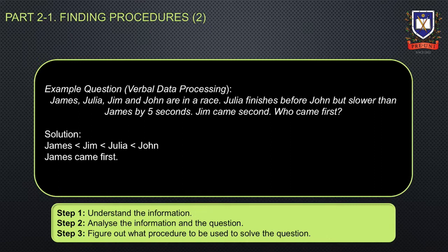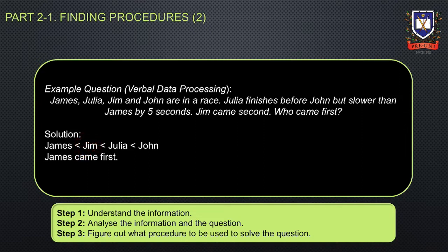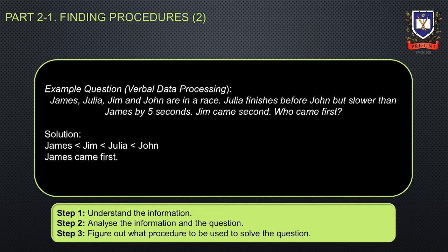We firstly know that Julia finishes before John, so we can list it out like this. We also know that Jim came second, so we can place him accordingly. We know the relationship between James and Julia is that Julia finishes five seconds slower than James, so that tells us James has to be first. Because Jim is second, and Julia is faster than John, that means John is last and James is first.